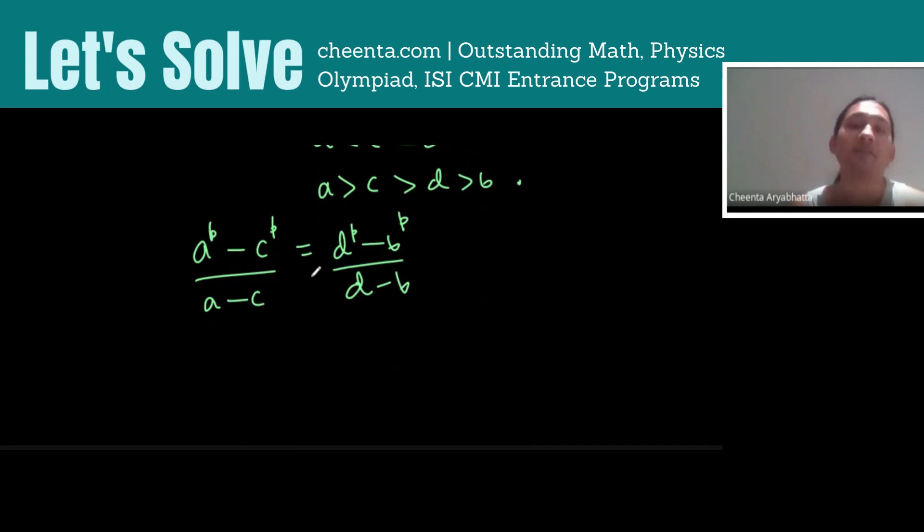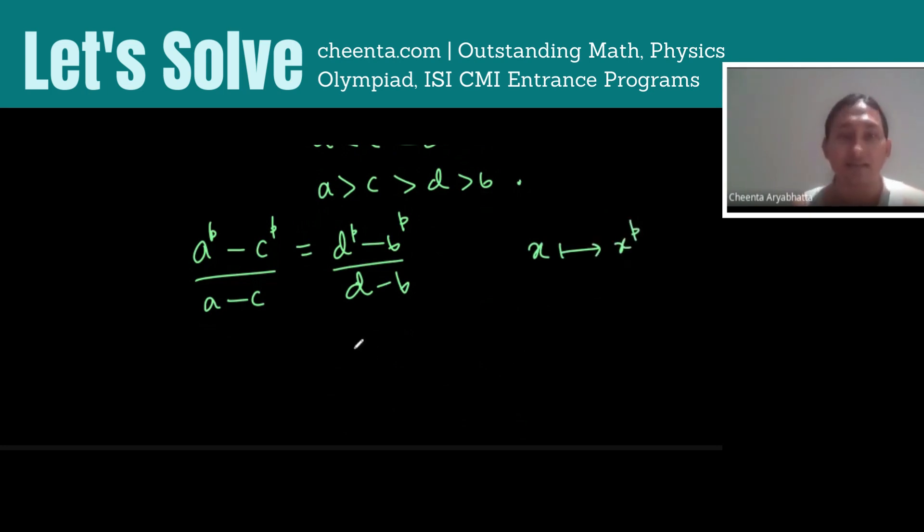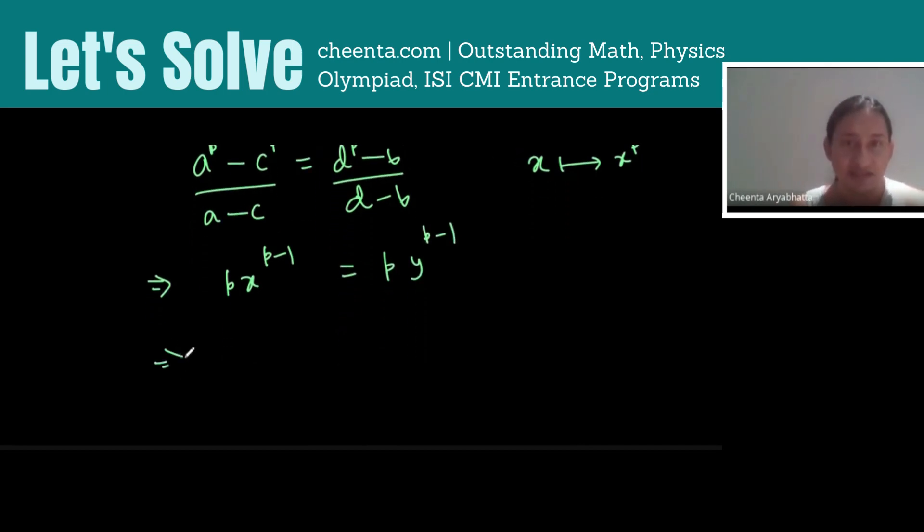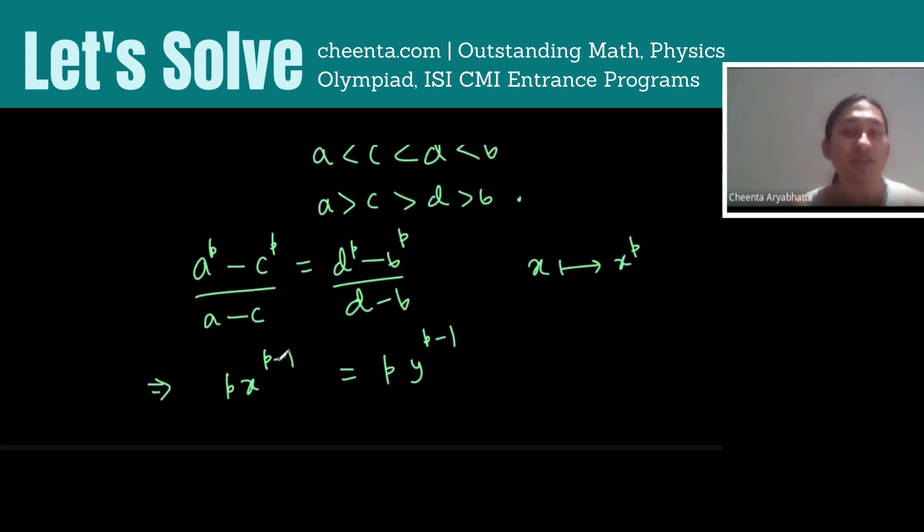Now, this looks like the mean value theorem. Specifically, mean value theorem for the function x goes to x^P. Therefore, by the mean value theorem, we have that there is some x between A and C such that Px^(P-1) and there is some y between D and B such that the right-hand side is Py^(P-1), which actually means x equal to y,